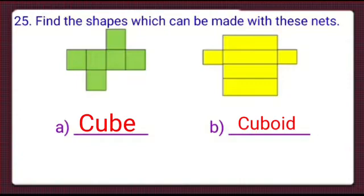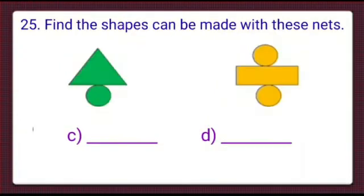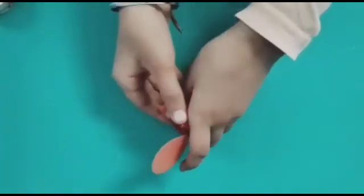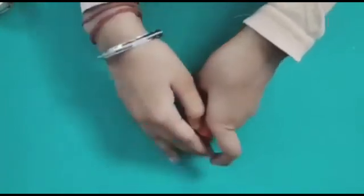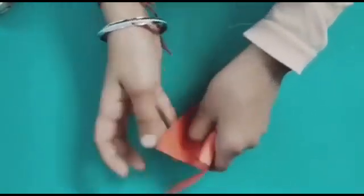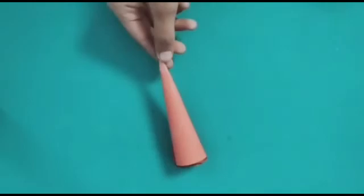In the third net, a green triangle and a circle are there. We will fold this net carefully. A 3D shape is ready and that shape is a cone. So this net of a triangle and a circle gives us a cone.